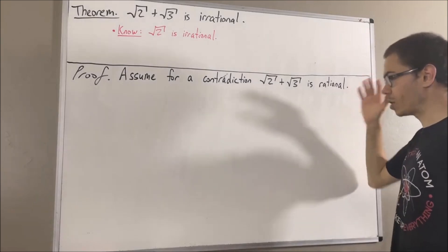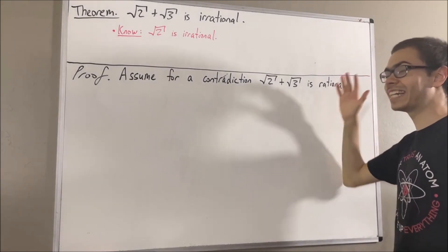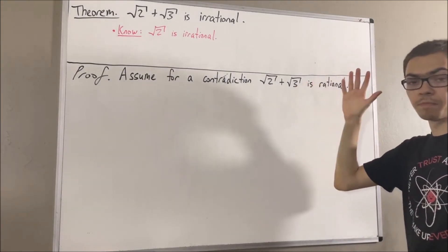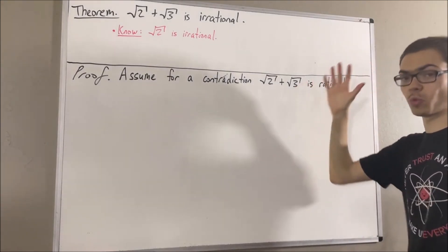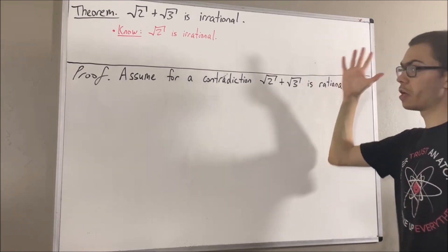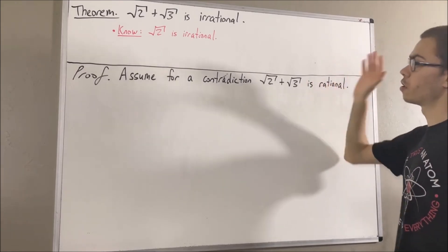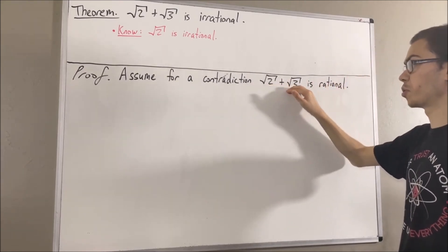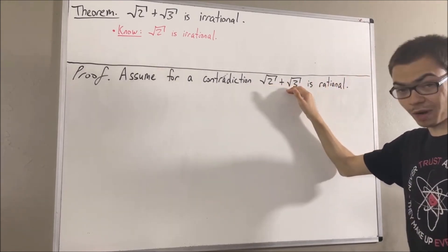Well, the reciprocal of any non-zero rational number is also rational. Therefore, the reciprocal of square root of 2 plus square root of 3 must be rational.